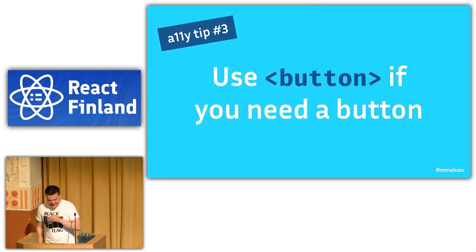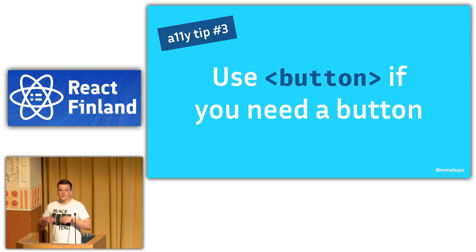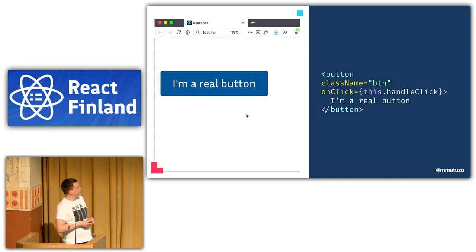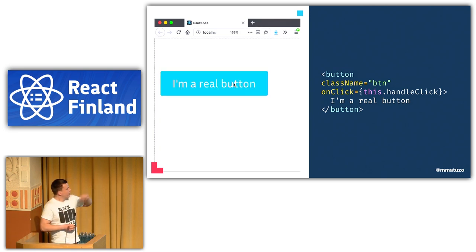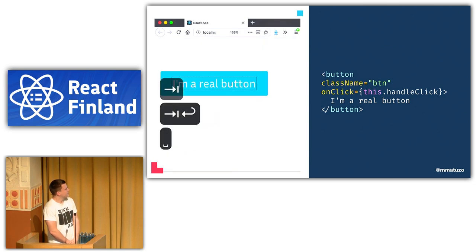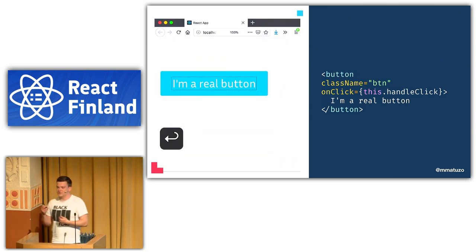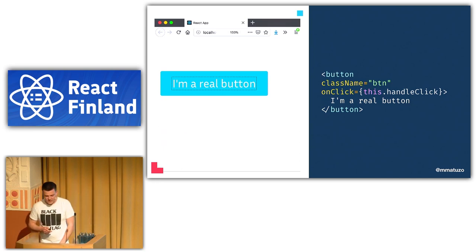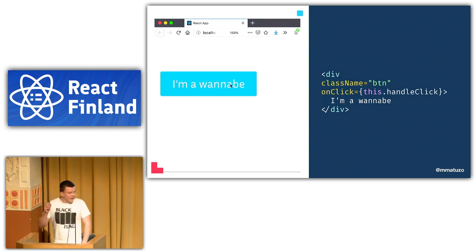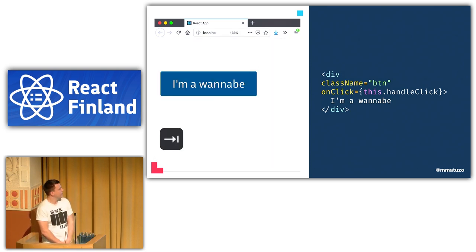Tip number three — and André is going to love this tip — use a button if you need a button. It might be tempting to use divs as buttons because they come with less default styling and it's easier to apply CSS, but there's a huge difference in user experience and accessibility. With a proper button element and a click event, clicking works, pressing Enter triggers it, and pressing Space triggers it — it's accessible to mouse users, keyboard users, and screen reader users.